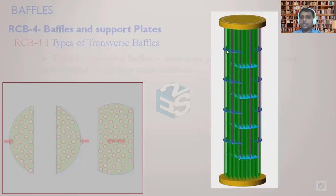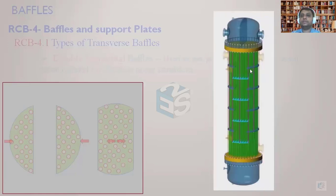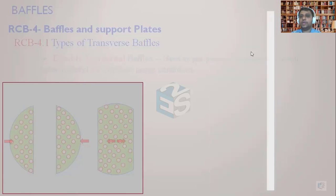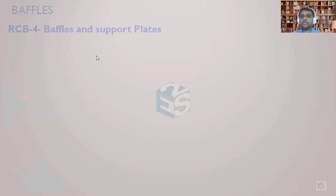If the flow is coming from the nozzles, by the time the flow reaches the central tubes, it will have reduced its velocity, and there would not be as much damage to the central tubes as compared to the peripheral tubes. This would be the tube bundle of the double segmental baffles. This is the entire heat exchanger — you can see there are two nozzles from which the fluid will be coming, and then it will move through the heat exchanger, and the outlet would be taken out. I hope you have understood double segmental baffles.